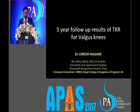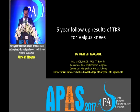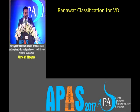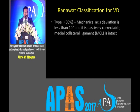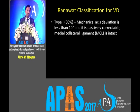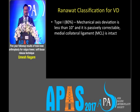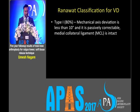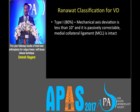I would like to start with this valgus TKR follow-up with the five-year results. For our study, we use the Runout classification where type 1 is a mechanical axis deviation less than 10 degrees and passively correctable, and MCL is intact.